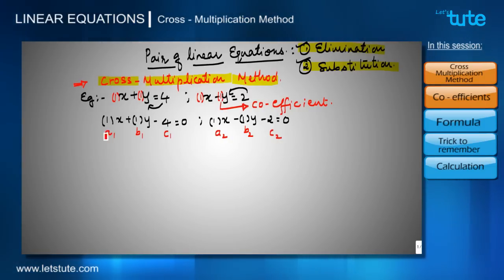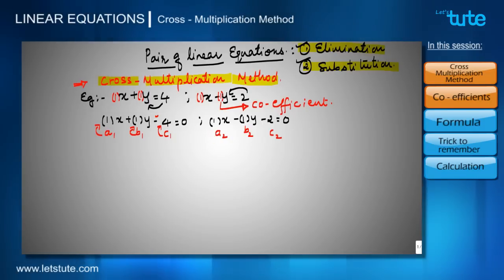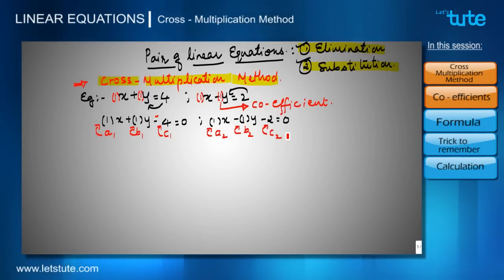So a1 is 1, b1 is 1, and c1 is minus 4. For the second equation, a2 is 1, b2 is minus 1, and c2 is minus 2.